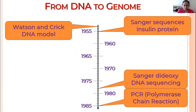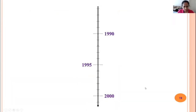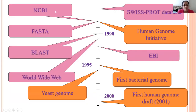Then we have sequencing. Without a sequencer, we could not have sequenced anything. Insulin was the first protein. Then things started evolving — we started seeing polymerase chain reaction, then NCBI, and all of these different databases. In 1991, the official term 'bioinformatics' was coined and appeared in the literature.